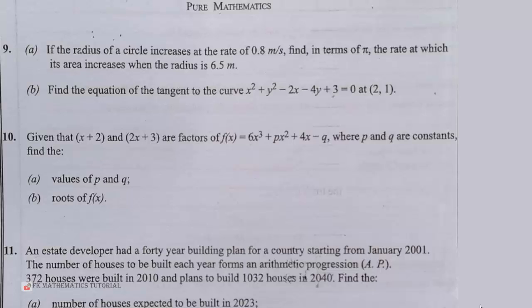Let us continue with the pure mathematics section of the WAEC 2023 elective mathematics further mathematics theory questions paper 2. Question 9 says that if the radius of a circle increases at a rate of 0.8 meters per second, find in terms of pi the rate at which its area increases when the radius is 6.5 meters. The B part says find the equation of the tangent to the curve x squared plus y squared minus 2x minus 4y plus 3 equals 0 at the point (2,1).